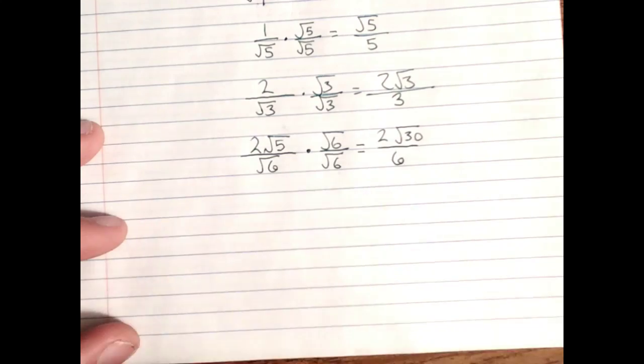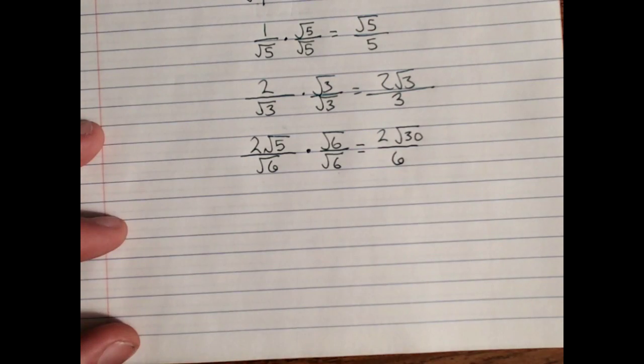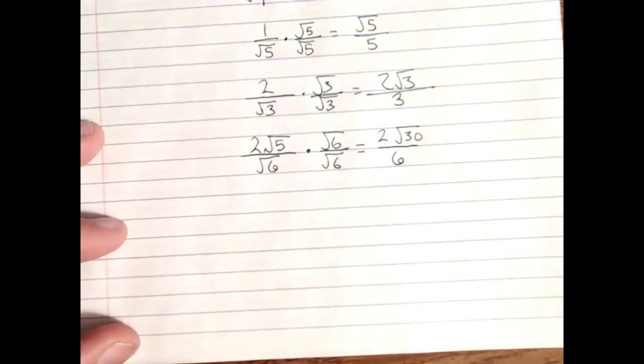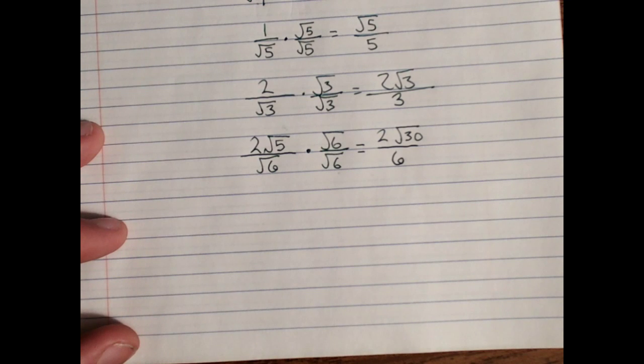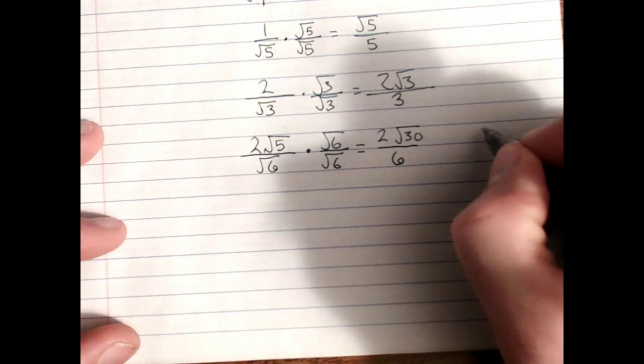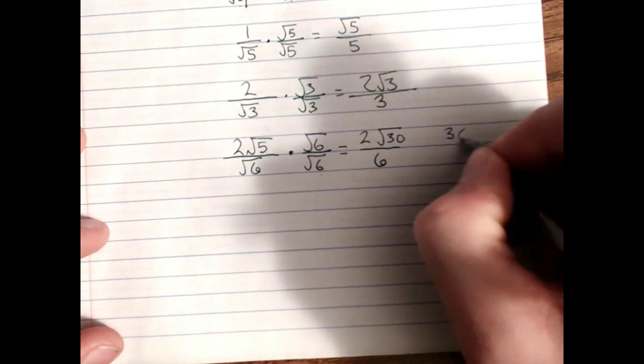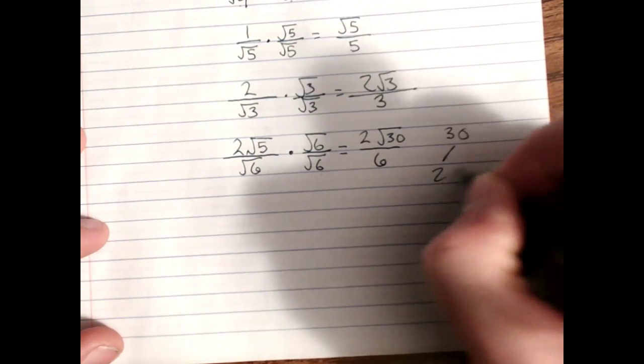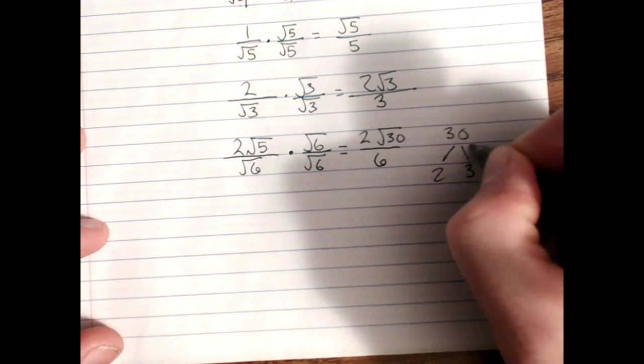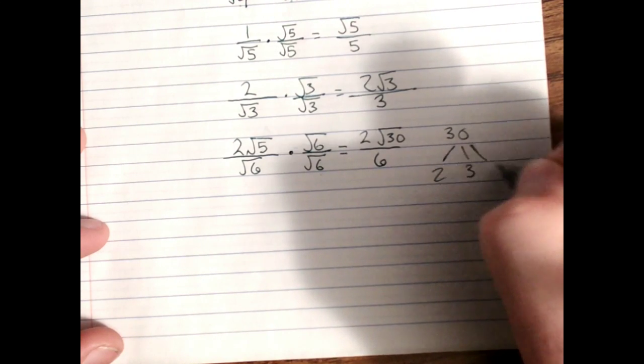But root 30 can be simplified. Actually, no, it can't. There are no perfect square factors inside of root 30. Root 30 because its prime factorization is 2 times 3 times 5.